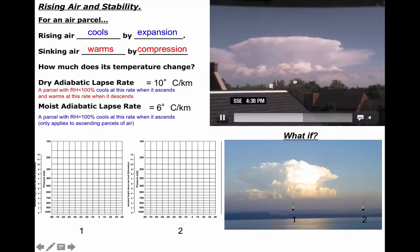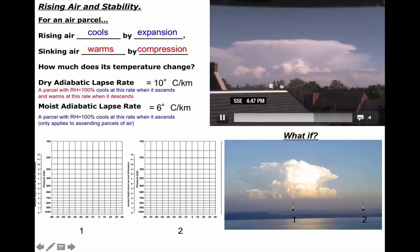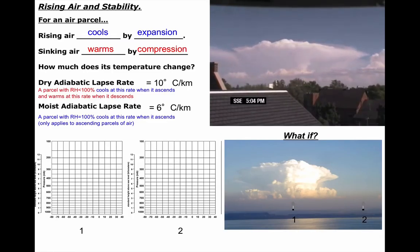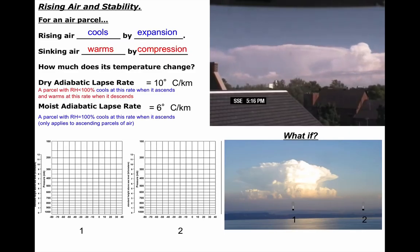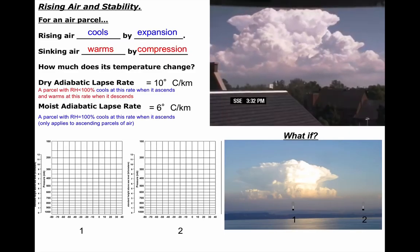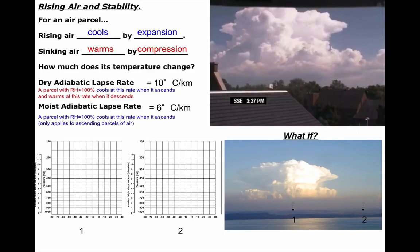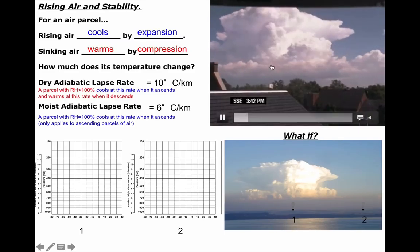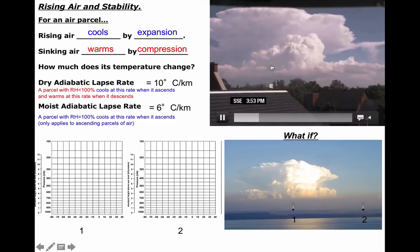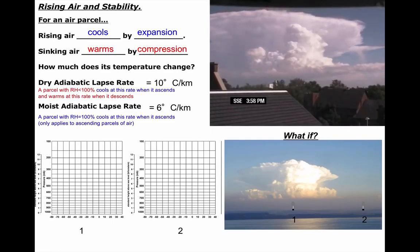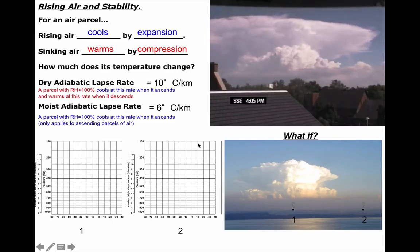The dry adiabatic lapse rate is the rate at which the parcel cools below 100% relative humidity. The moist adiabatic lapse rate is the rate at which it cools when we're actively making a cloud inside the parcel. This is pretty amazing — in this video, these ascending parcels are briefly penetrating into the stratosphere, rapidly destabilizing the atmosphere. We call this explosive convection.